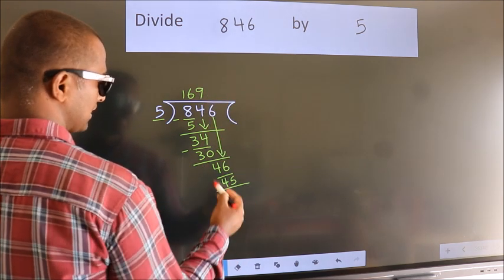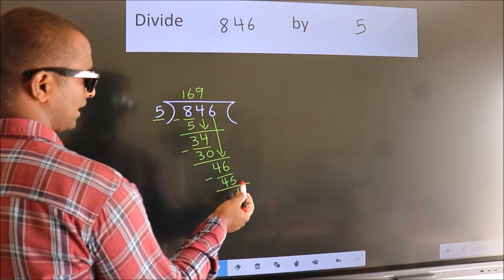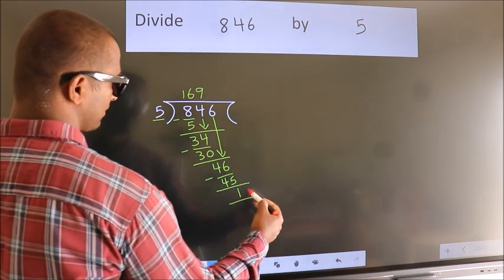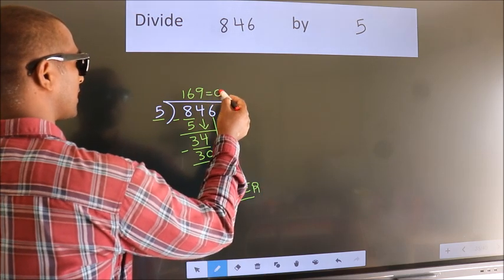Now we subtract, we get 1. No more numbers to bring it down, so we stop here. This is our remainder, this is our quotient.